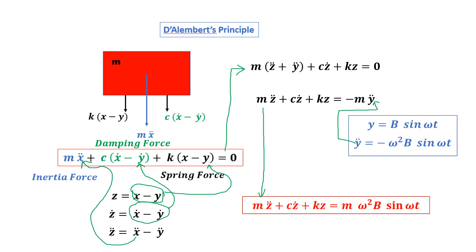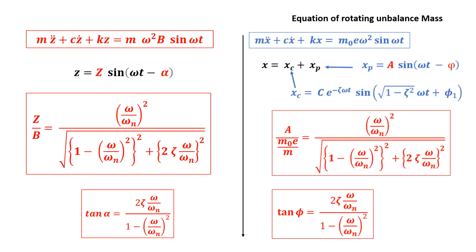We have derived this differential equation, and if we recall the equation of the rotating unbalanced mass discussed in previous lectures, it is MZ̈ + CŻ + KZ = M·m₀·e·ω² sin(ωt), where m₀ is the mass of the rotating unbalanced mass, e is the eccentricity of that rotating unbalanced mass, ω is the frequency of rotation, and M is the total mass.